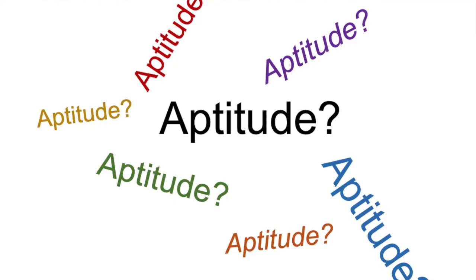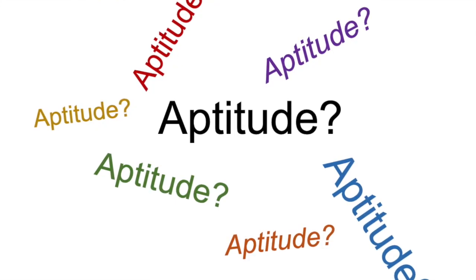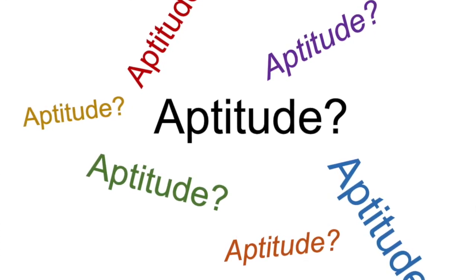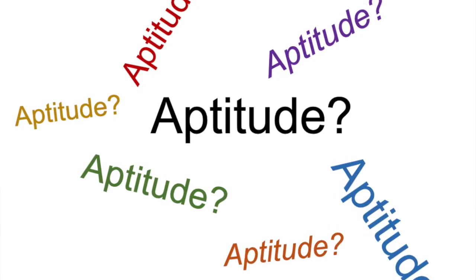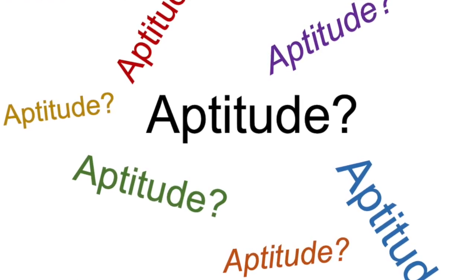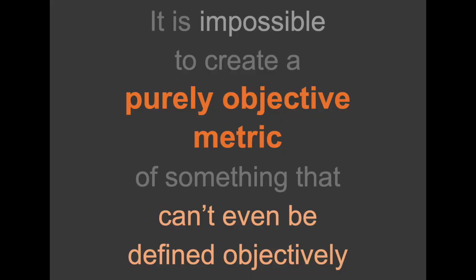The SAT is supposed to measure aptitude, but aptitude itself is not well defined. Should it measure past success or future success? Should it measure success at school or success in life? Or should it measure the ability to learn? It is impossible to create a purely objective measure of something that cannot even be objectively defined.